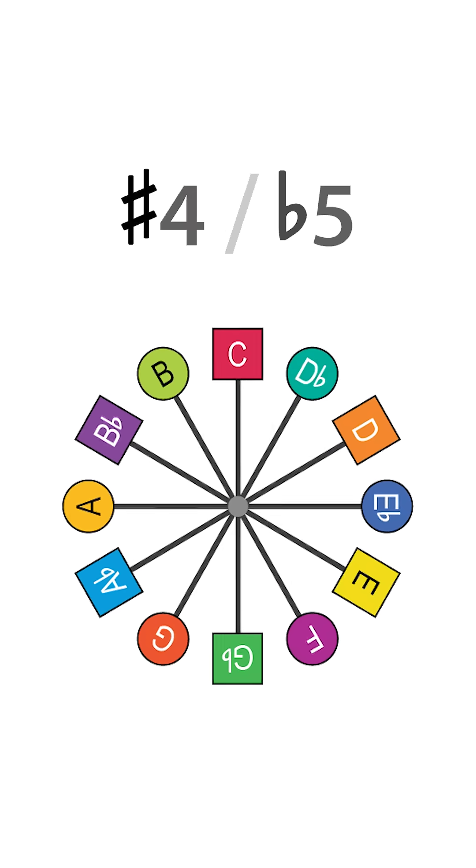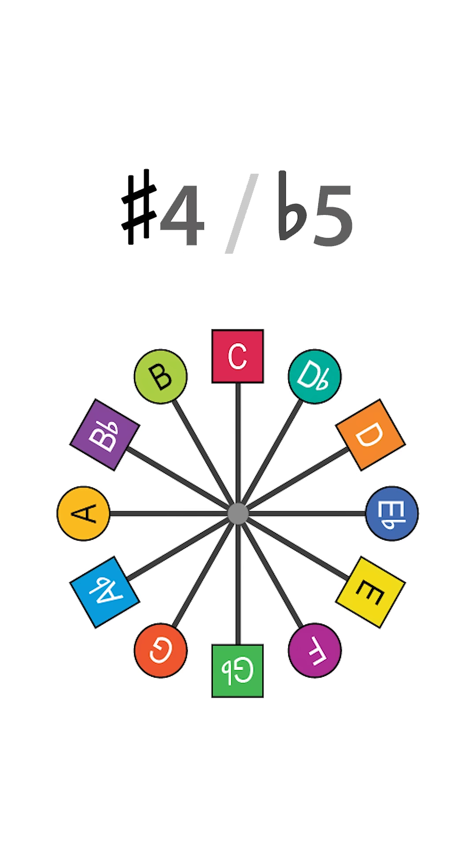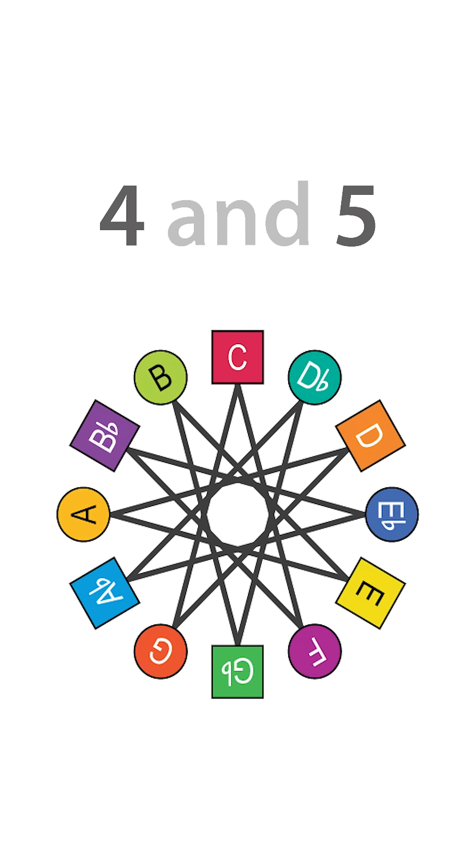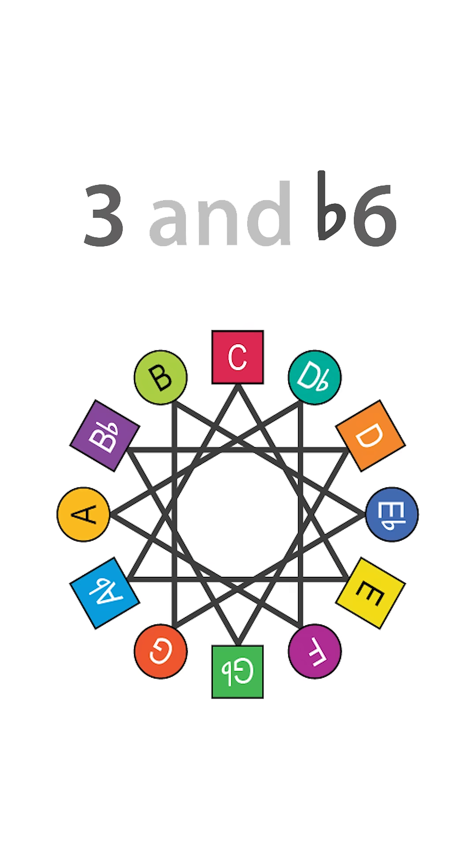In all keys, all of the tritones, or complementary colors, form a kind of starburst pattern, while intervals four and five form this geometric shape. Intervals three and flat six in all keys form triangles like this.